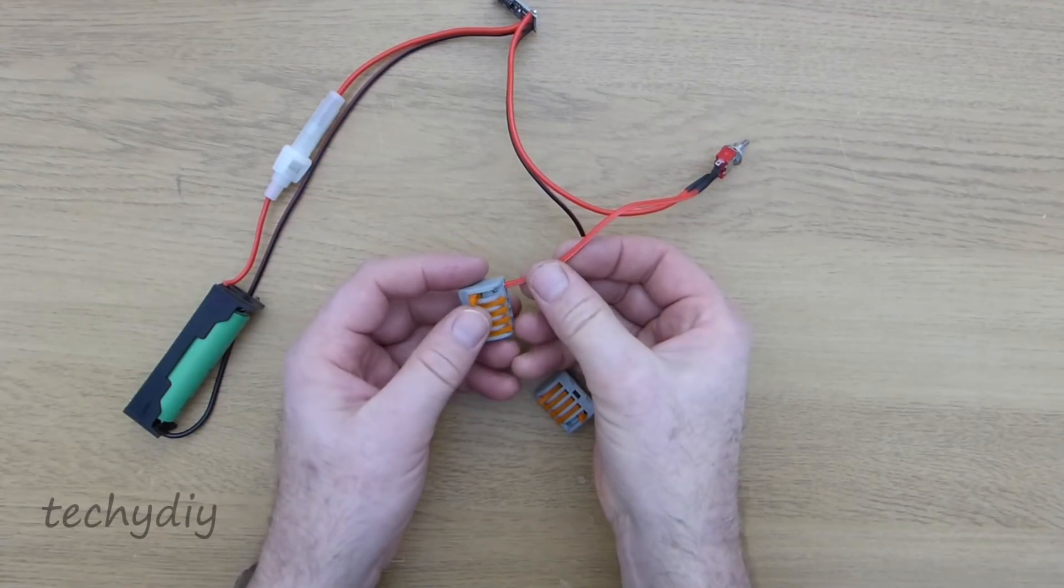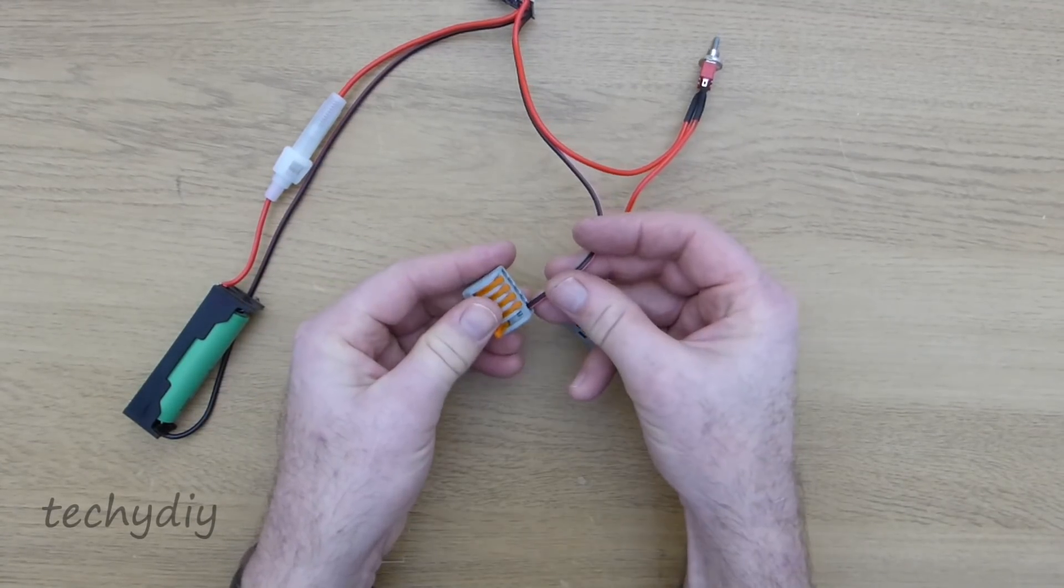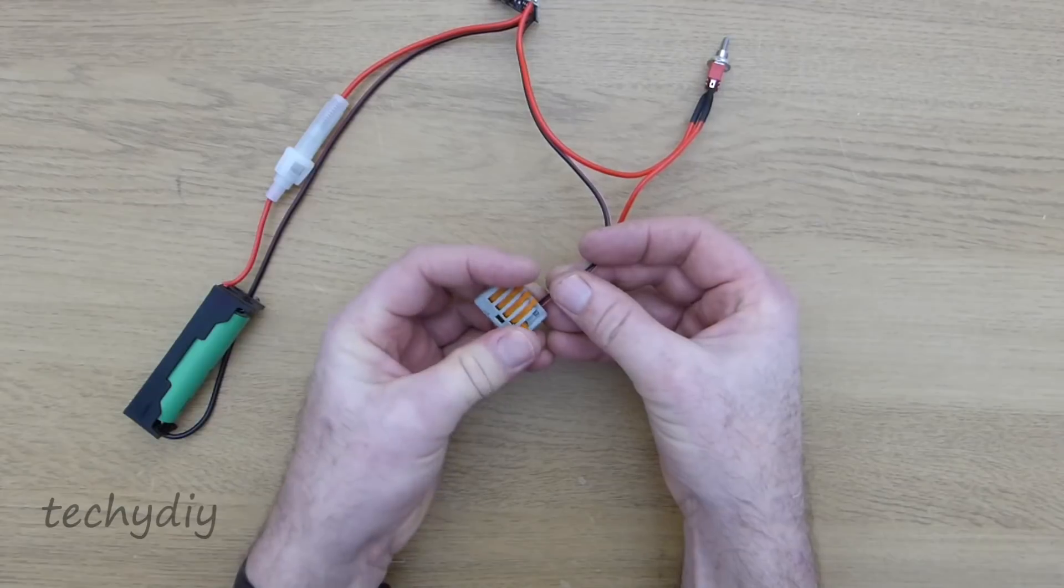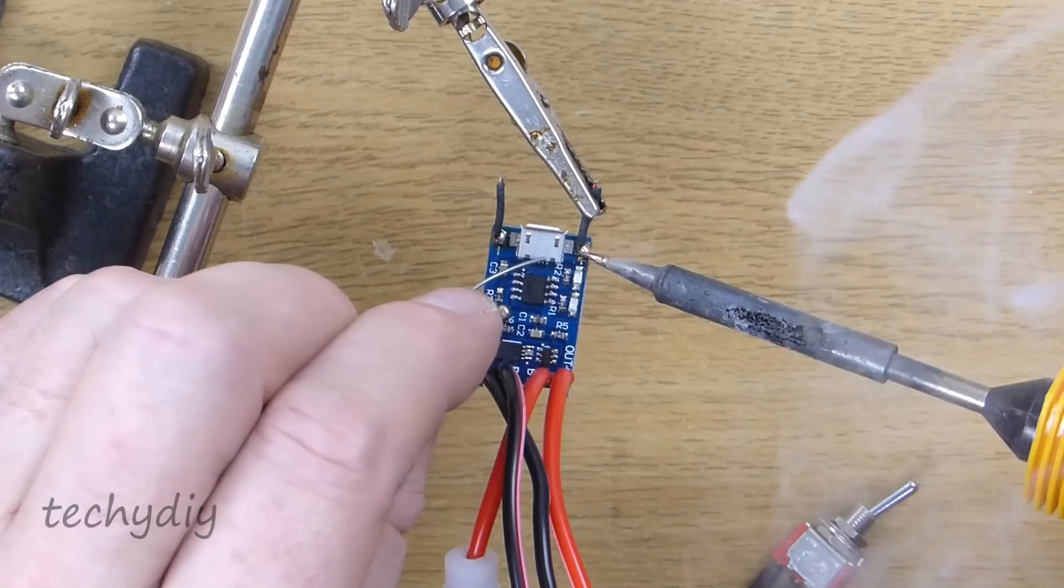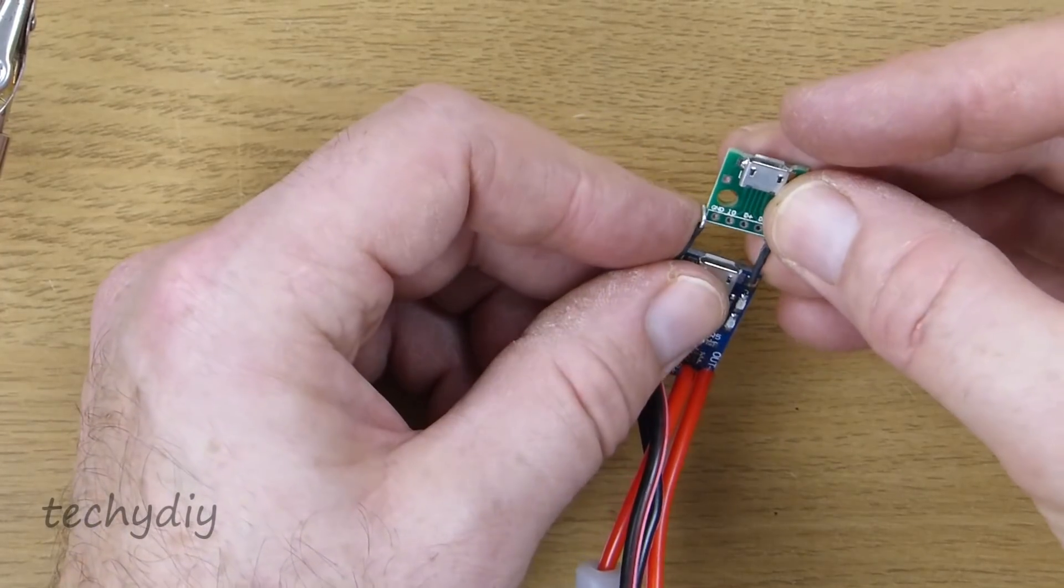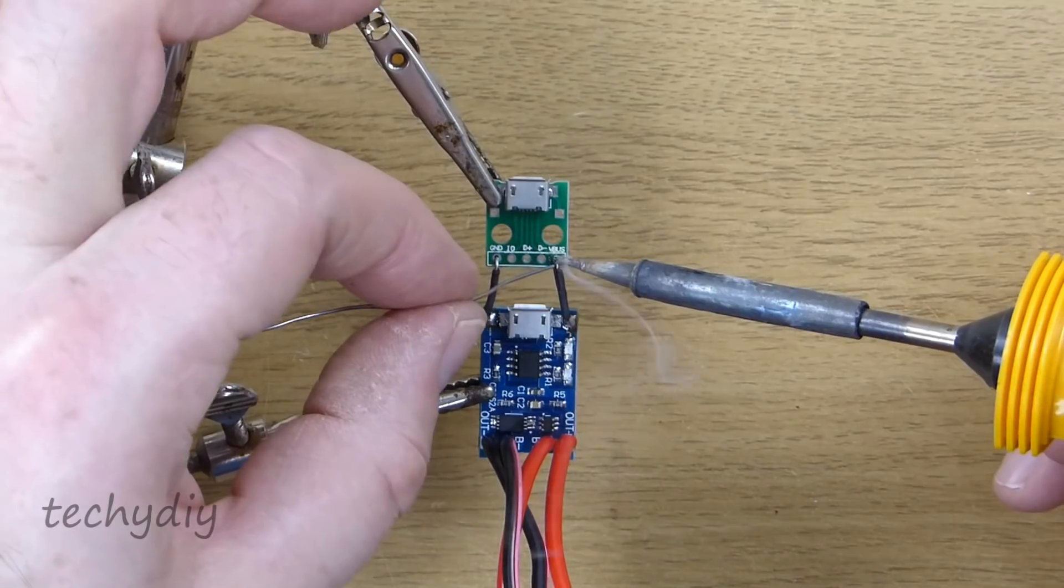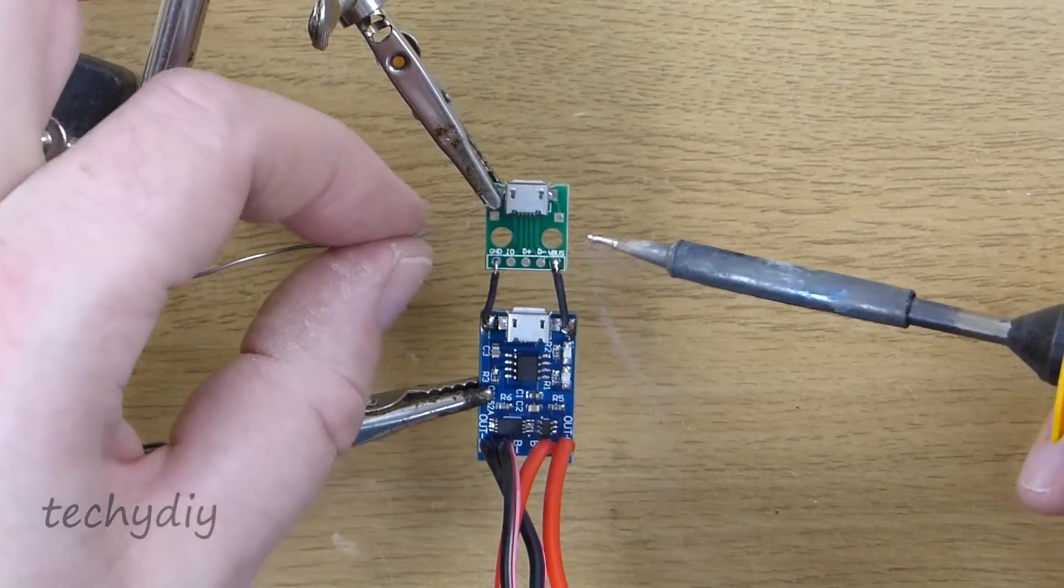To terminate the connections, WAGO terminal blocks are installed. Two lengths of wire are then cut and soldered between the input power solder pads on the TP4056 module and the corresponding pads on the micro USB breakout board.